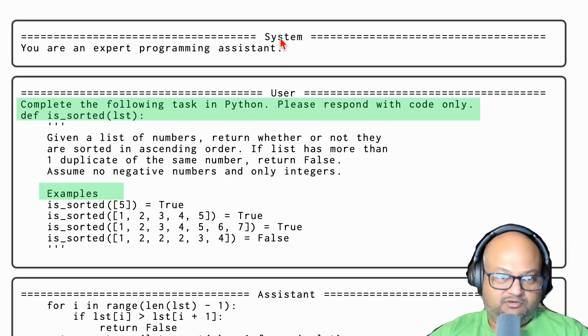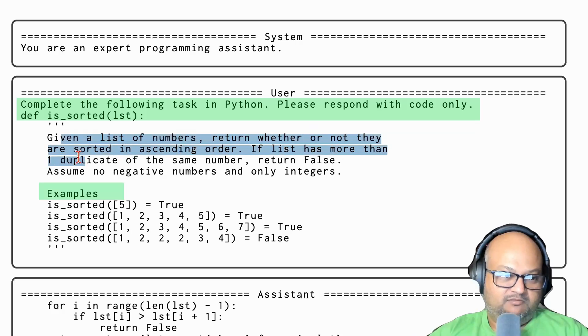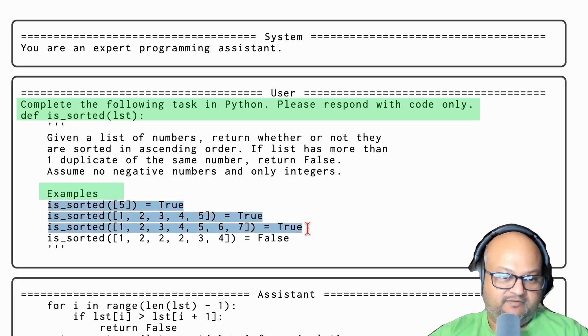Alright, so prompts are the new source code. We got to look at the prompts. Thankfully, the authors did provide prompts in the appendix. Let's walk through one example loop of this methodology. You have a system prompt, pretty simple: 'You are an expert programming assistant.' And you kick off with your task description: 'Given a list of numbers, return whether they are sorted. Return false if the list has more than one duplicate of the same number.'